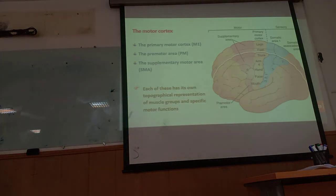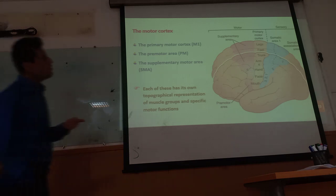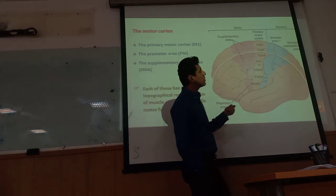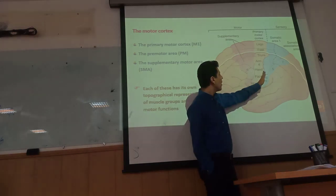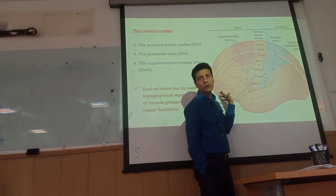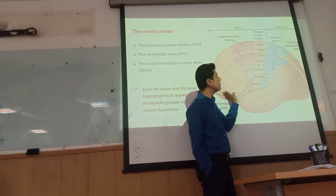Now let's talk about the motor cortex. We have seen the function of the spinal cord and brain stem. Several areas in the cortex are related to movement — all of them are in the frontal lobe, anterior to the central fissure.